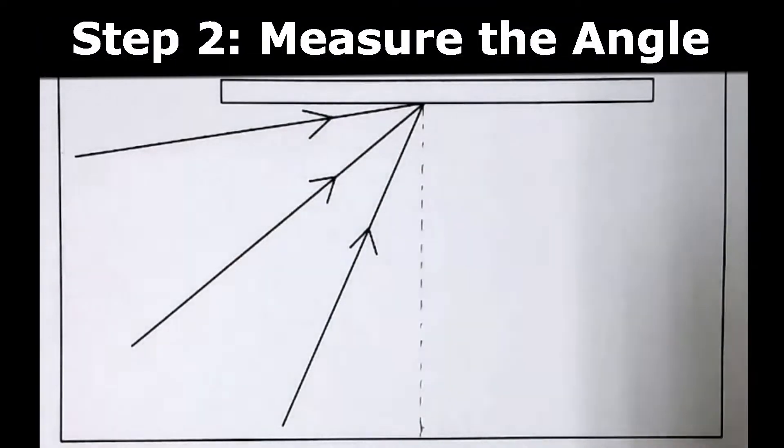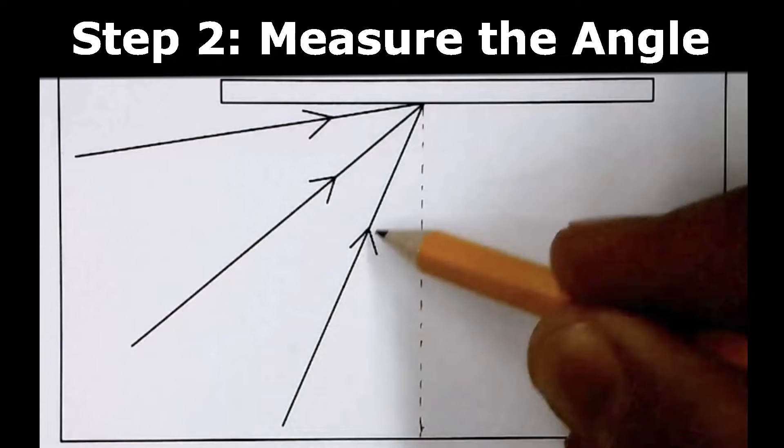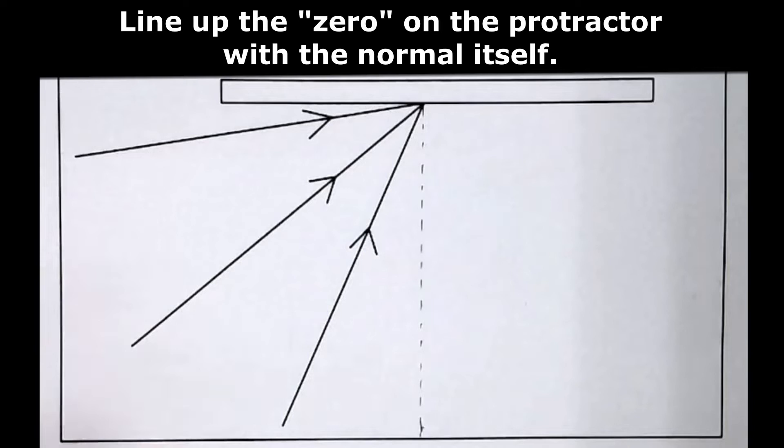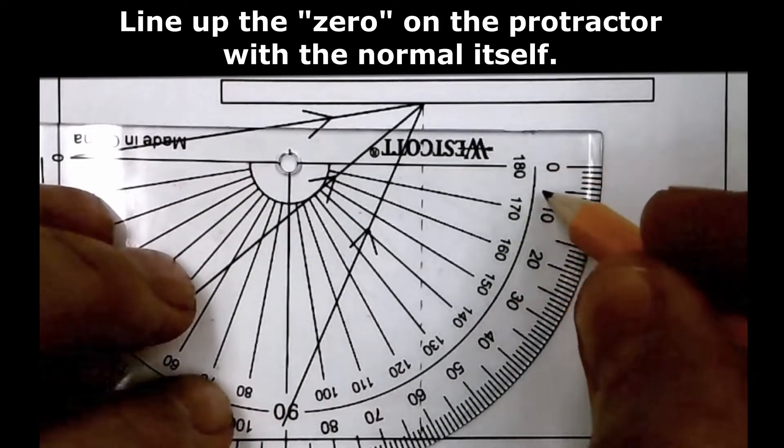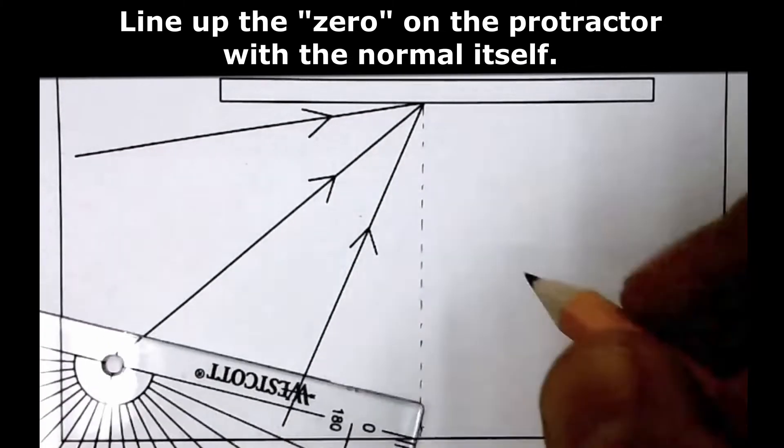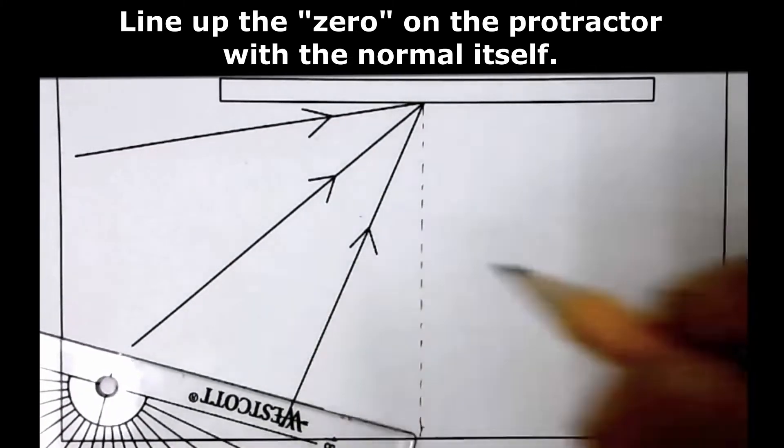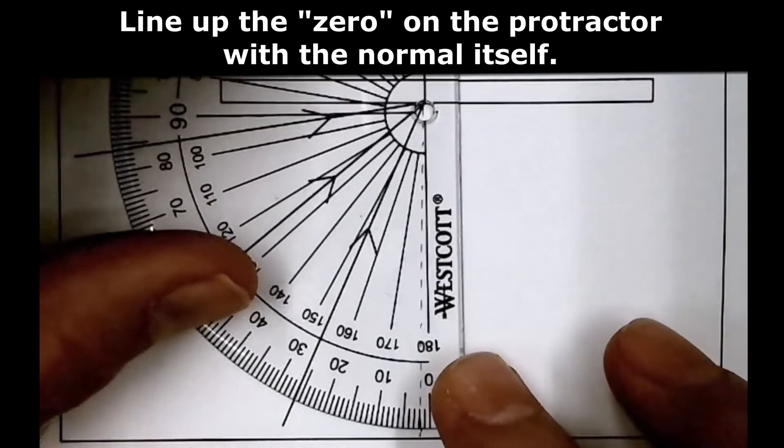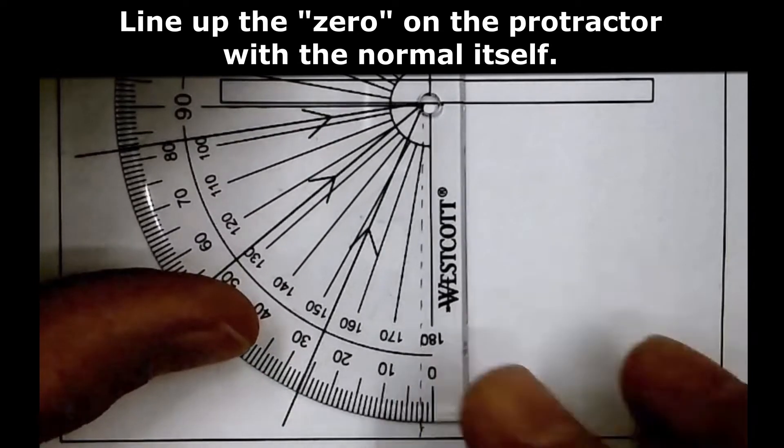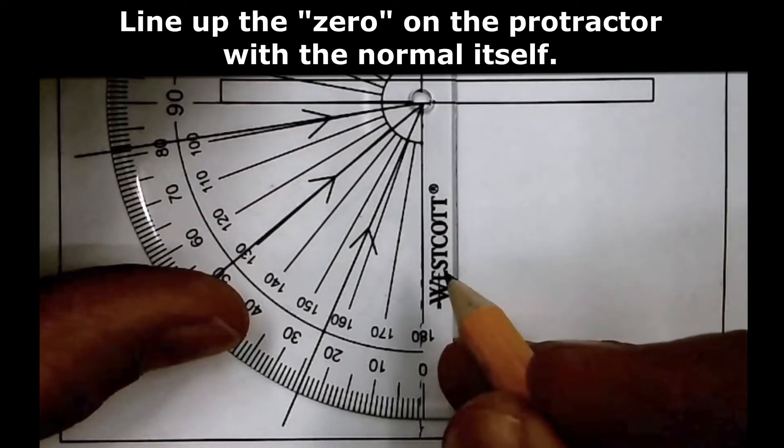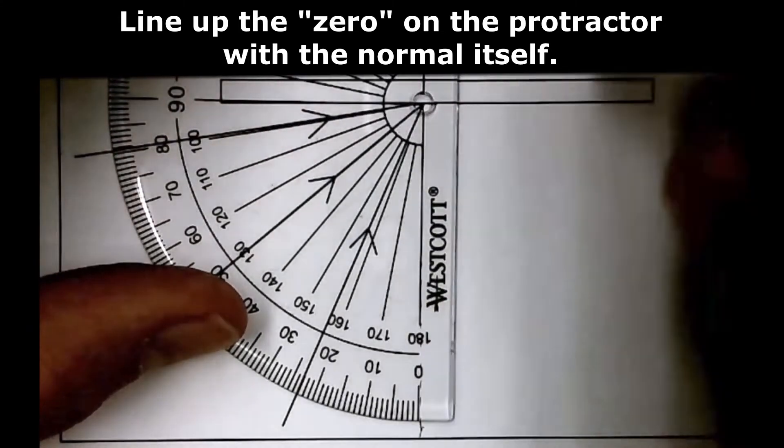Let's measure the angle of incidence for this ray. An important trick is to set the zero of the angle measurements to the normal itself because we measure all of our angles moving away from the normal. To do that, let's rotate our protractor so the 90 is lined up to the surface. The zero is lined up to the normal.